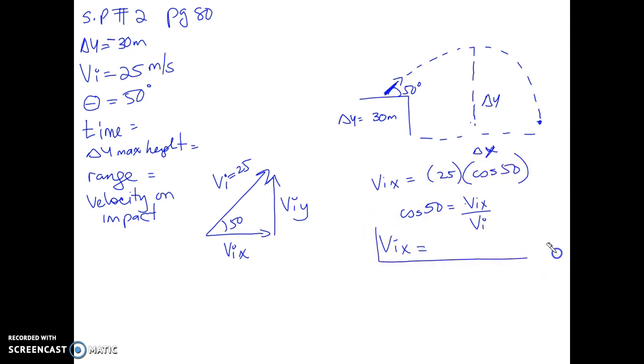What do you get for your vix? 16.1 meters per second. Your viy, since this is cos, this is going to be sine. So sine 50 which equals to viy divided by vi, and we're going to write that down, so it's going to be 25 times the sine of 50.